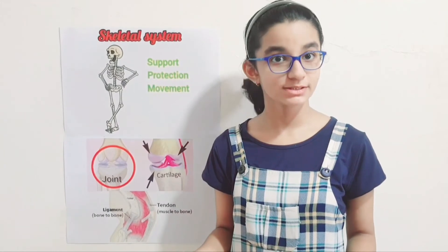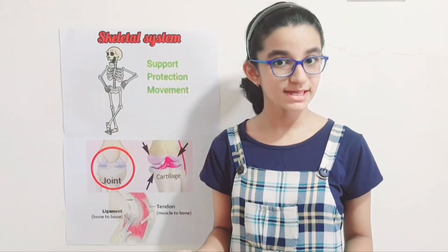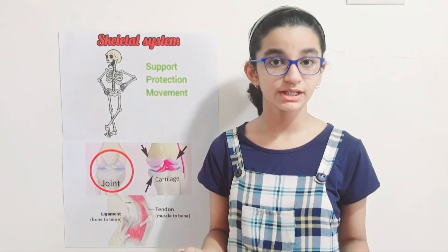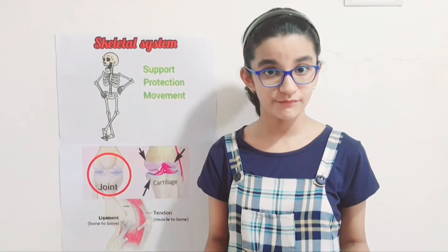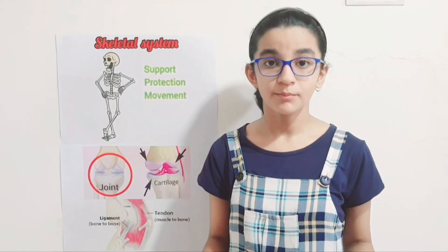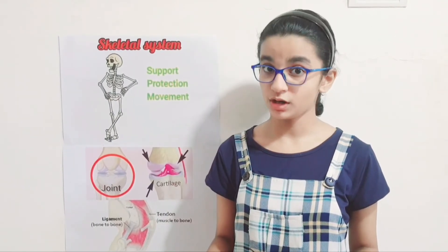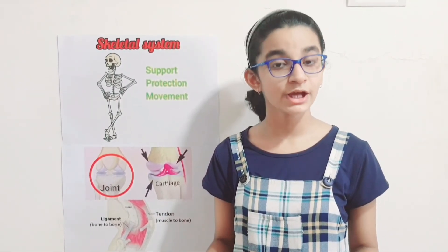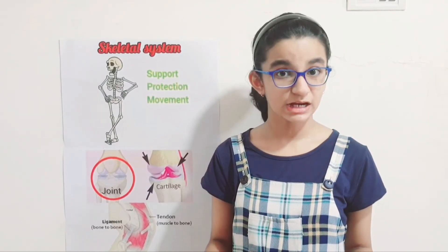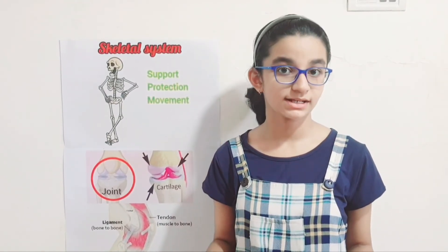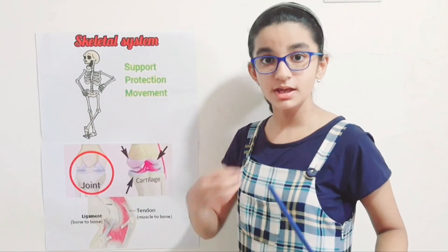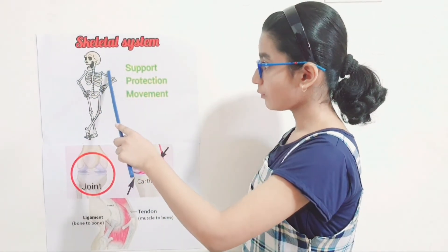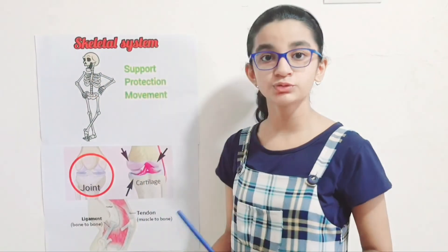Now it's time for facts. Number 1: babies are born with 270 bones. Number 2: most of your bones are in your hands and feet. Number 3: bones are strong but teeth are stronger. Number 4: bones are natural healers. Number 5: teeth are not counted as bones but they are considered to be a part of the skeletal system. Number 6: some people are born with a 13th rib, but usually we have 12 ribs. Thank you and Jai Hind.